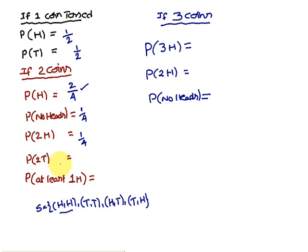Probability of at least one head means it may be one head or two heads. One head gives two pairs, two heads gives one pair, so three pairs out of four are favorable. Therefore probability of at least one head is 3/4.